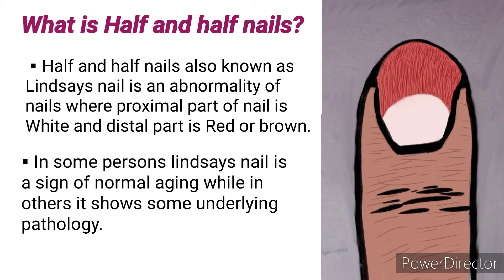Half and half nail is a condition where the proximal part of the nail — the white part, also known as the lunula — has become bigger, covering more than half of the nail, which does not happen in normal conditions. The distal part is red or brown. In some persons, half and half nail may be a sign of normal aging, while in others it shows some underlying pathology.